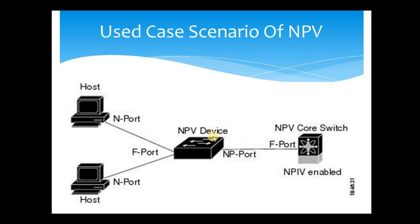Now let's understand the use case scenarios of NPV with the help of a diagram. The first scenario is when your fabric has 239 SAN switches. As we know, each SAN switch in the fabric should have a unique domain ID. If you have 239 switches, all switches will have unique domain IDs. When the maximum number of domain IDs — 239 — is reached and you need more switches, NPV comes into play.